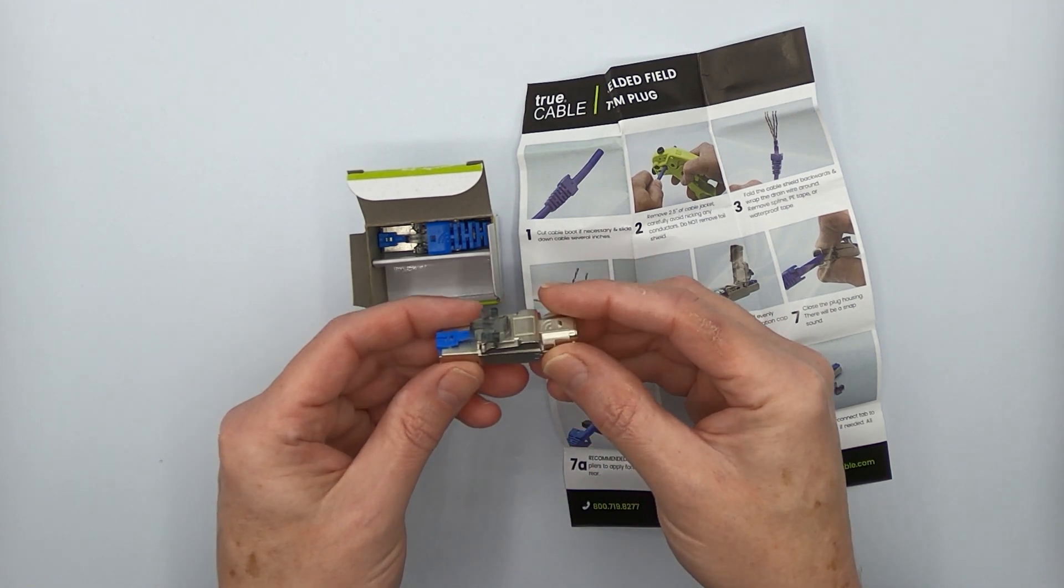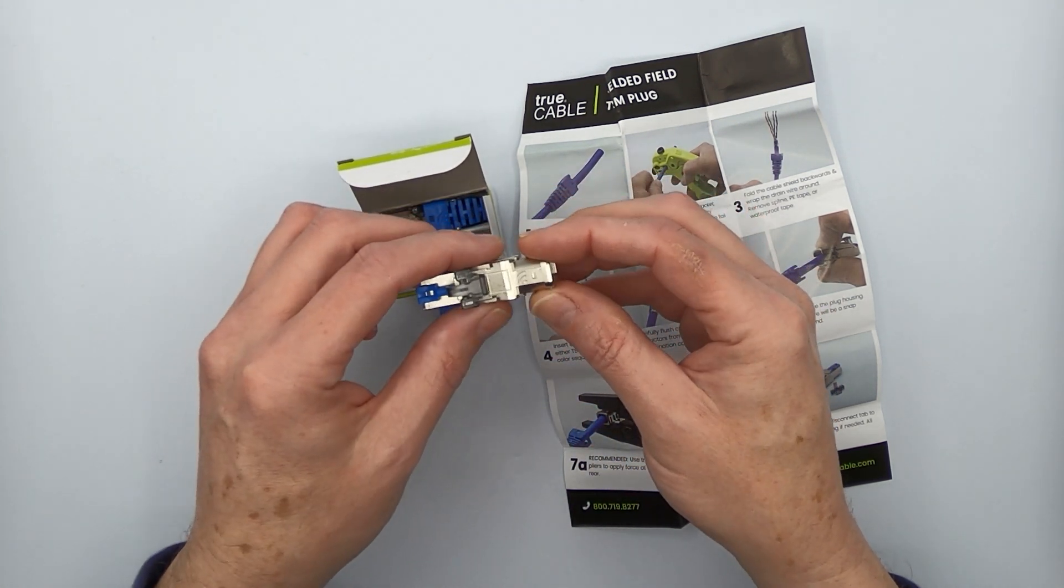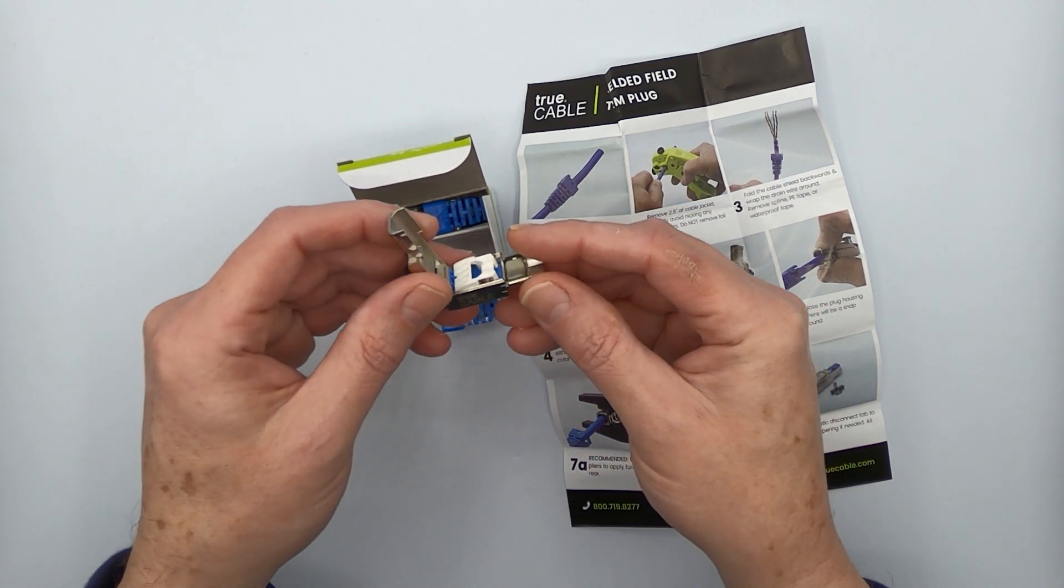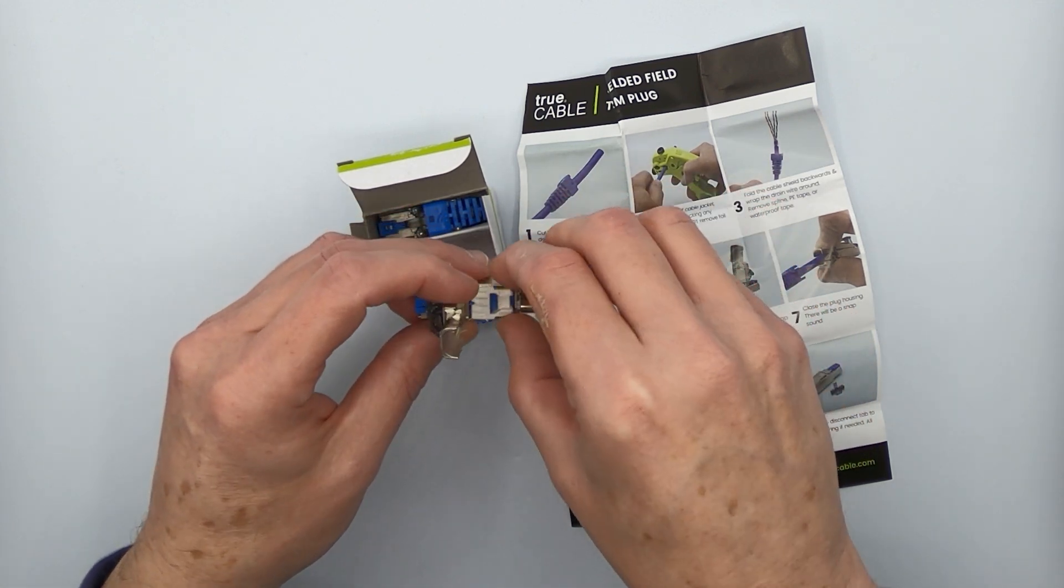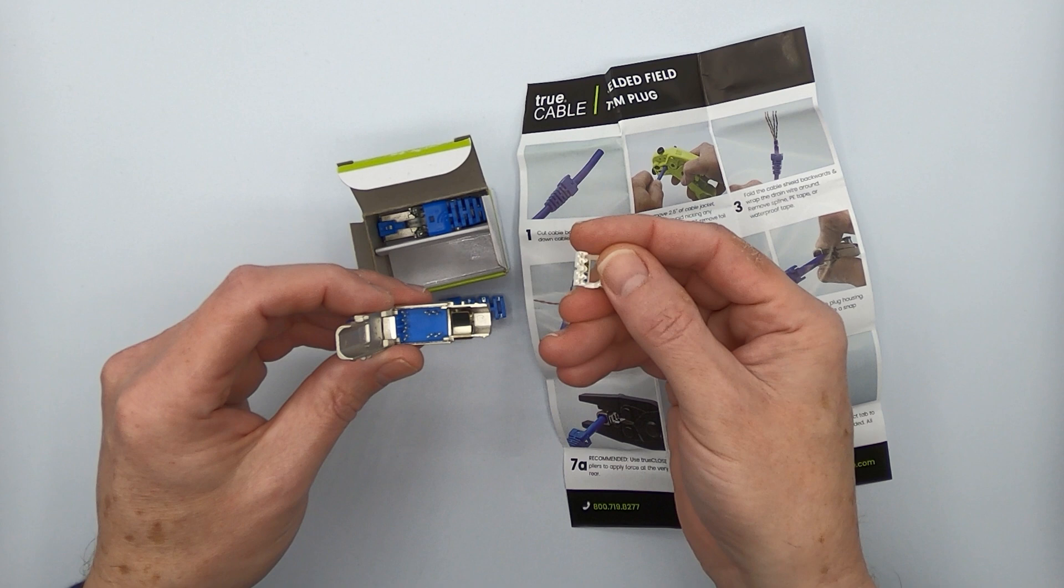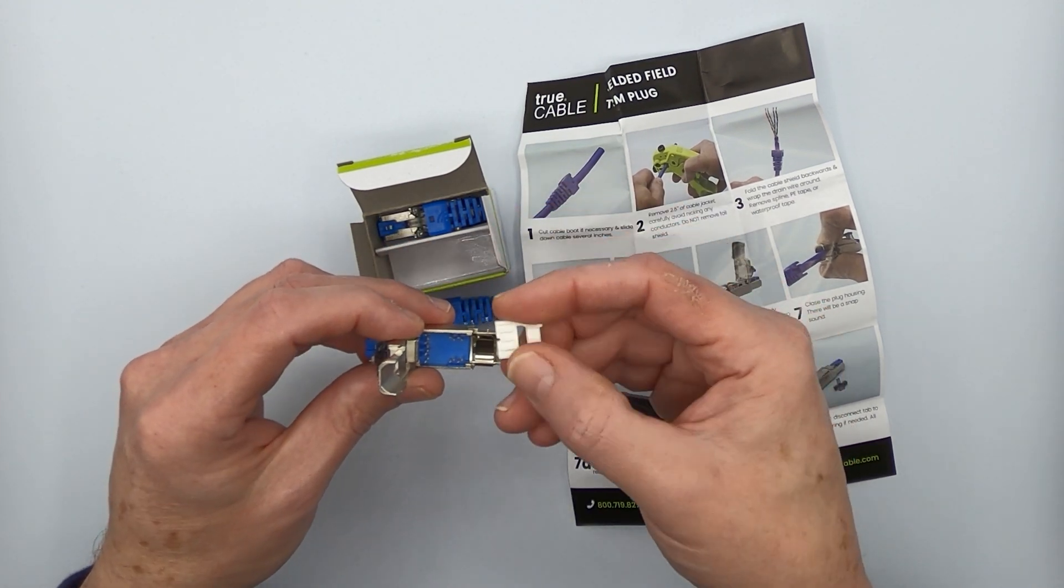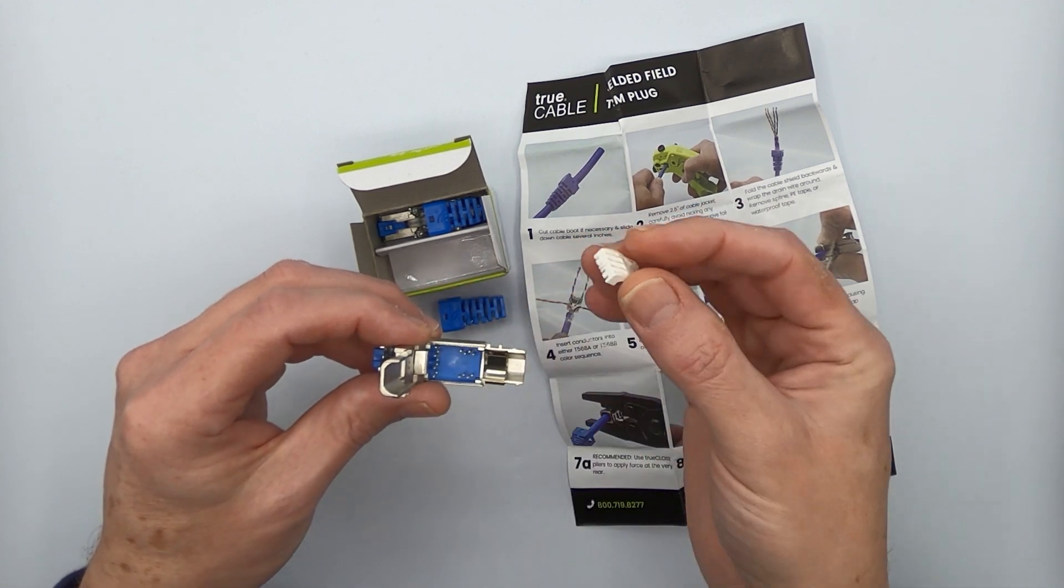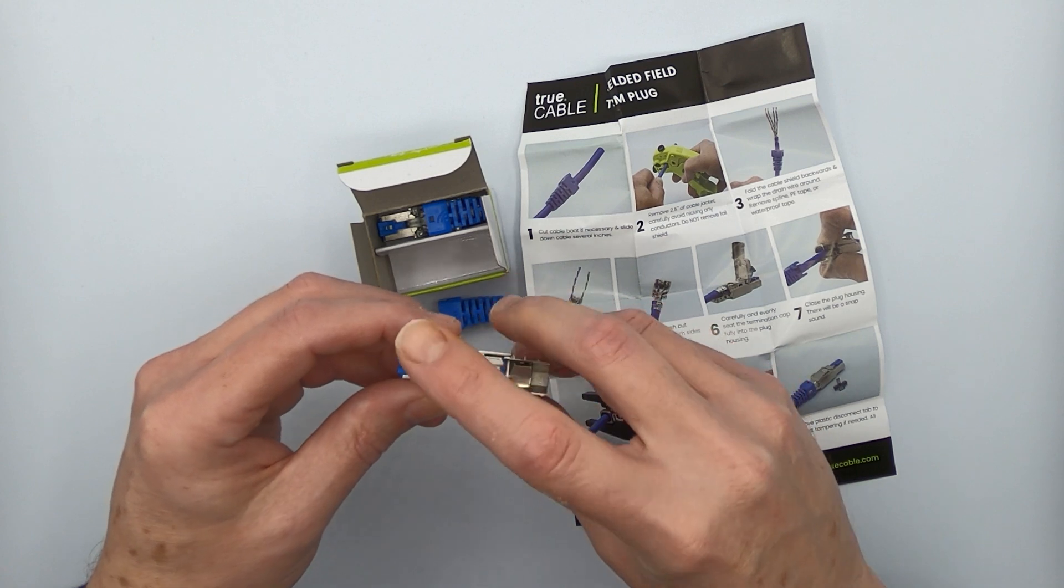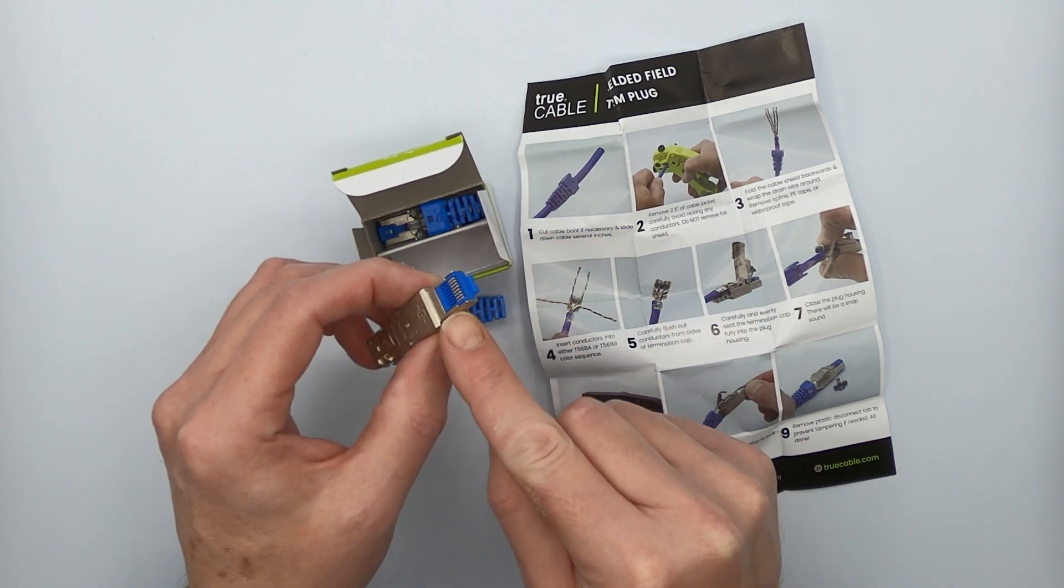And then we've got the field termination plug itself. This particular type of connection suffers from a personality disorder in a way. It actually terminates like a shielded keystone jack, a tool-less one in this case, because you put the conductors into a holder cap and then flush cut and then close it. So it functions like a keystone jack in the way you terminate it, but it ends up being an RJ45 plug.